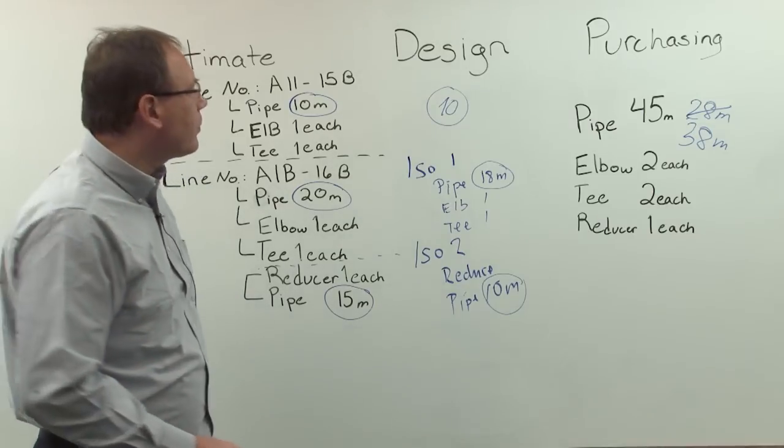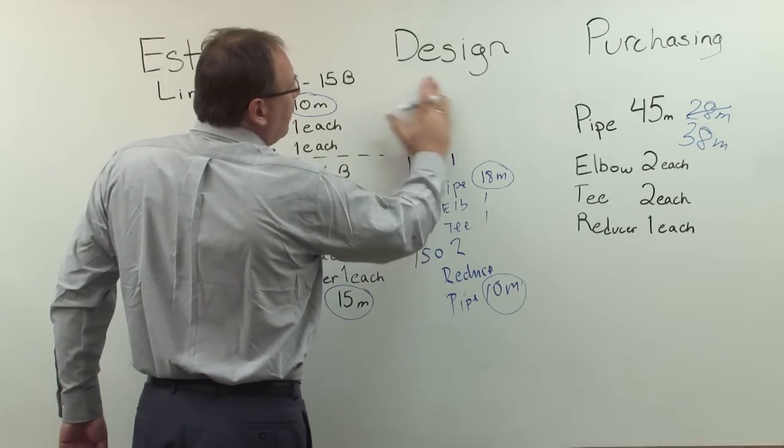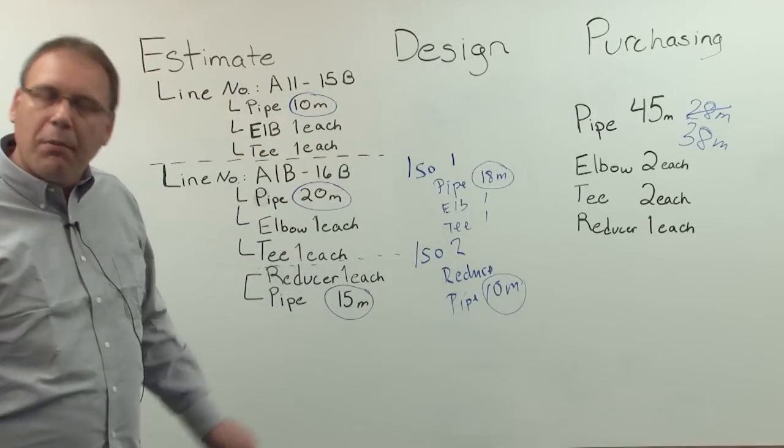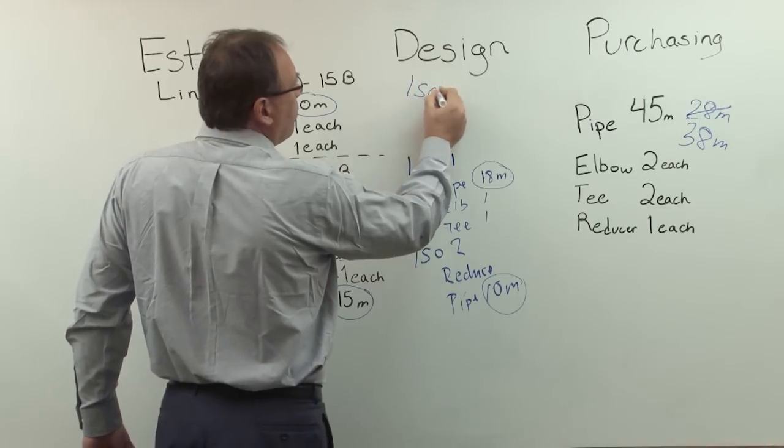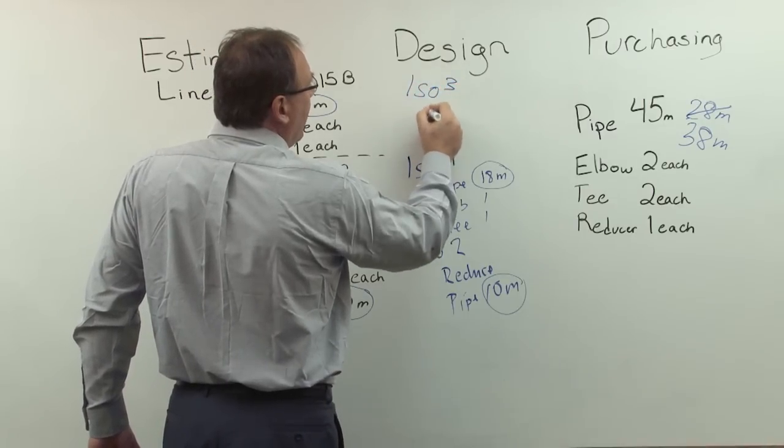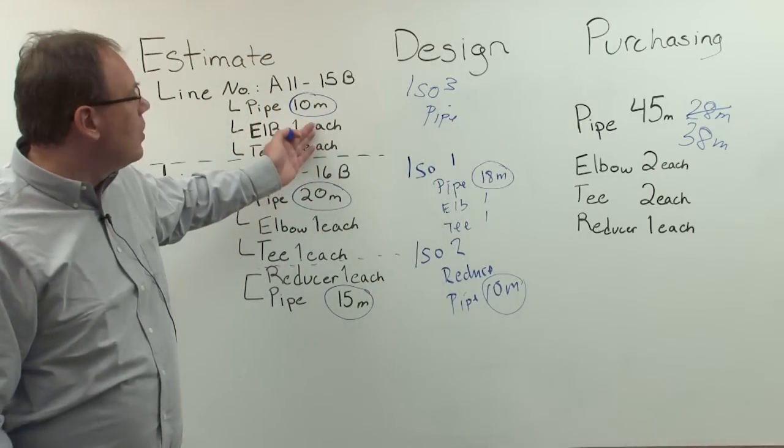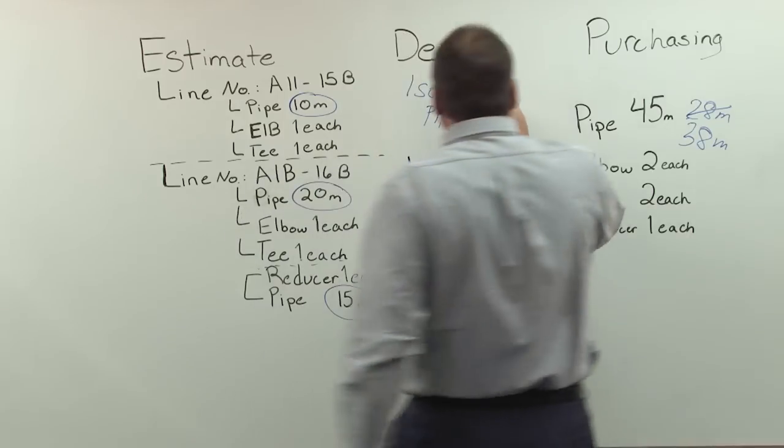Now, let's assume, we are creating another, we are now creating now the design for this line number. Now, maybe perhaps it is small enough, maybe just another isometric. Isometric 3, and then pipe, instead of just 10 meters, perhaps now, let's say 20 meters.